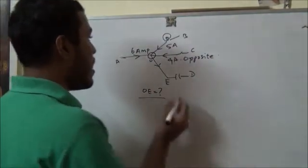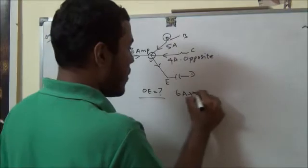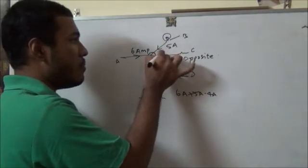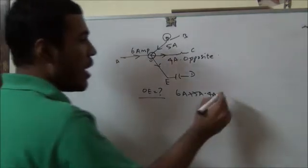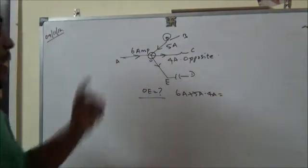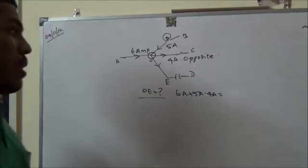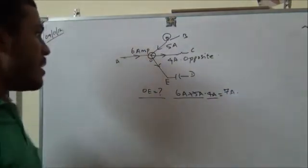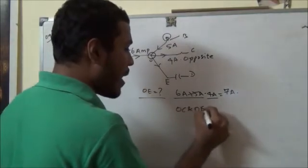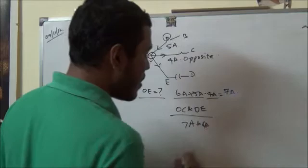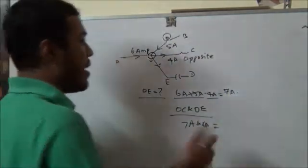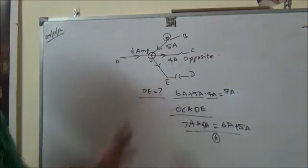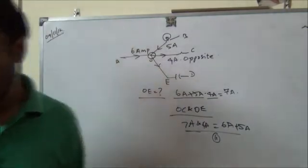At the junction, what are all the currents entering? 6 amperes entering, 5 amperes entering, and minus 4 amperes entering — that is, the 4 amperes is in the opposite direction, so you can say it is exiting. So minus 4 amperes, equal to the total current in arm OE. That gives us 11 minus 4 = 7 amperes. So OC and OE are exiting currents: 7 amperes and 4 amperes equals the entering currents 6 plus 5 = 11 amperes. The sum is constant on both sides — Kirchhoff's Junction Rule.